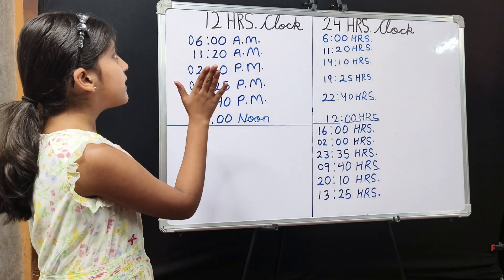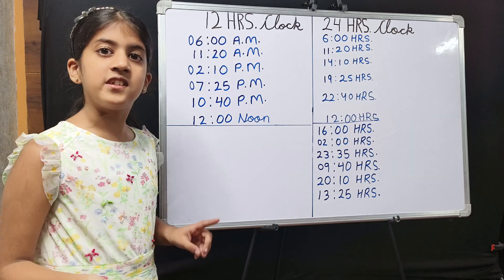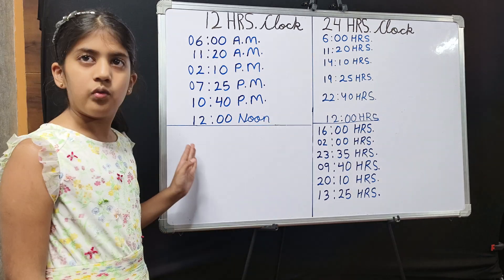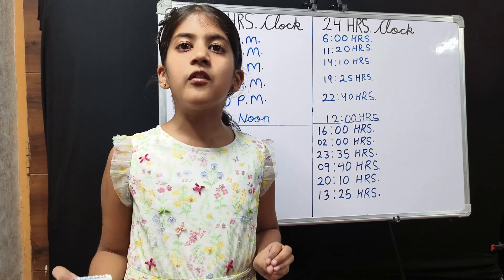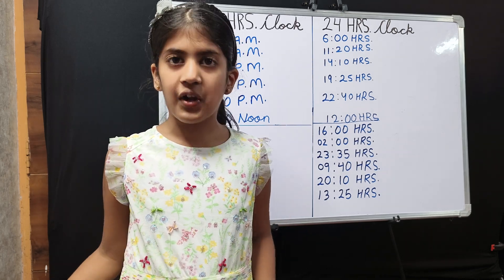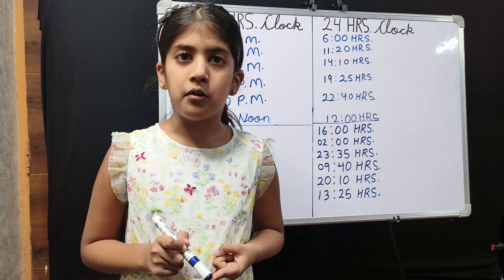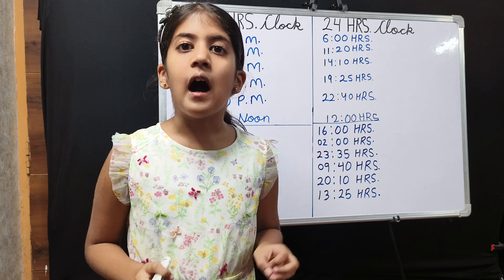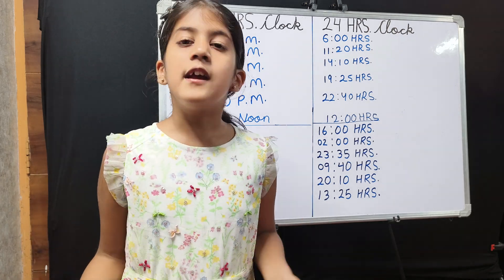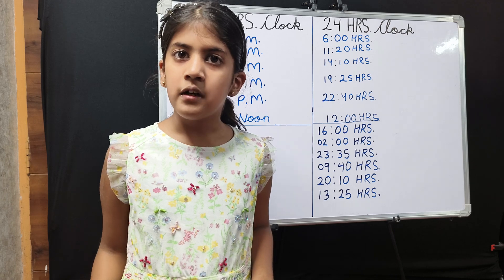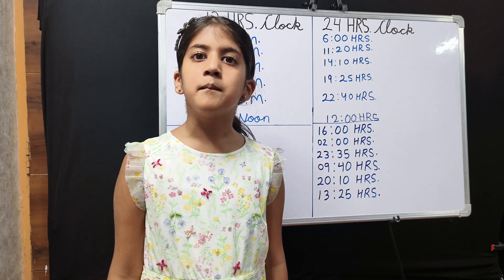This is how we convert the 12-hour clock time to 24-hour clock time. Now let's change the 24-hour clock time to 12-hour clock time. In 24-hour clock time, we check the hours. If the hours are more than 12, then we subtract 12 and write PM. If we cannot minus 12 from it, we write the digits as it is and put AM. Let's understand it better by some examples.